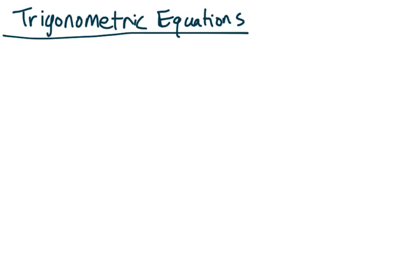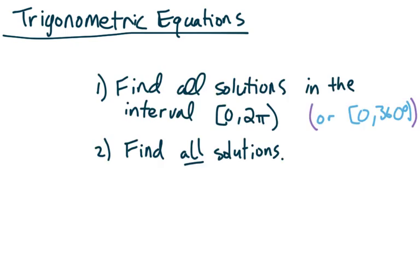Today we want to do trigonometric equations — equations where there is an unknown inside a trig function. For the trig equations we want to do today, there are two kinds of problems, two ways they can ask us. You can also think of it as two steps. Number one: find all solutions in the interval zero to two pi, or if we're using degrees, zero to 360 degrees. Or find all solutions, in which case this is your solid first step.